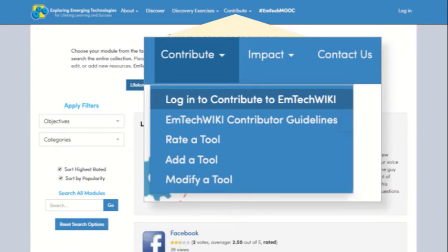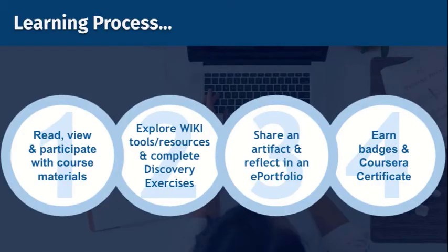This crowdsourced collection has grown from 150 original resources. The learning process of EmTech is to first read, view, and participate with course materials in Coursera. You're then asked to explore the wiki tools and resources to complete the discovery exercises. You then explore the tools, create an artifact, and reflect in a portfolio. Finally, you earn badges and a Coursera certificate.